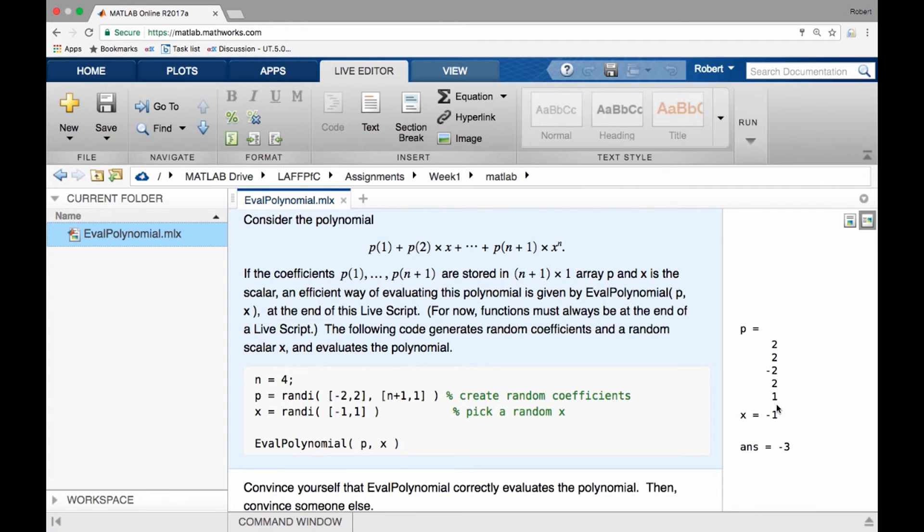Obviously, since these are randomly generated, you may not get the same ones. It then shows a randomly generated point x at which to evaluate. And it shows what the polynomial presumably is evaluated at that point, if this function was actually implemented correctly.